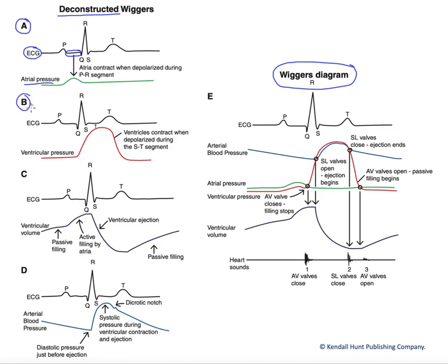In B, we're going to look at ventricular pressure alone, again under our ECG trace. We find that under our ST segment and a little bit beyond, we're going to be generating our ventricular pressure. Our ventricular cells depolarize during the QRS complex, but then they remain depolarized during the ST segment — that's when the majority of our ventricular pressure is generated. In this case, we're pressurizing that blood to drive it out through the semilunar valves into the systemic and pulmonary circuits.